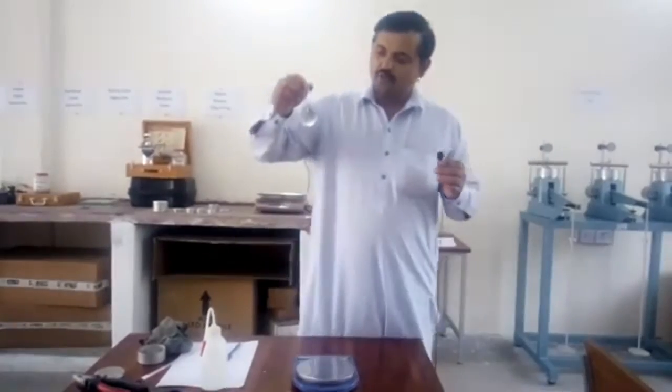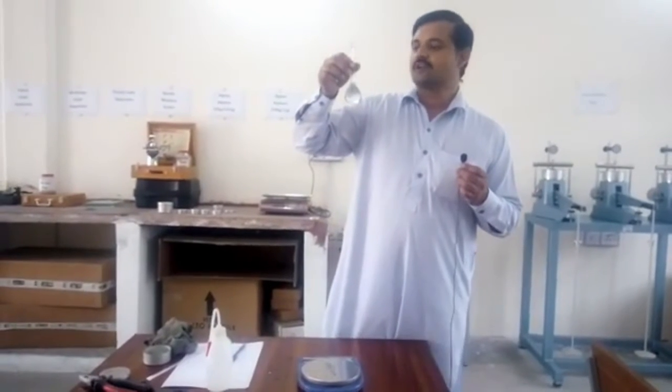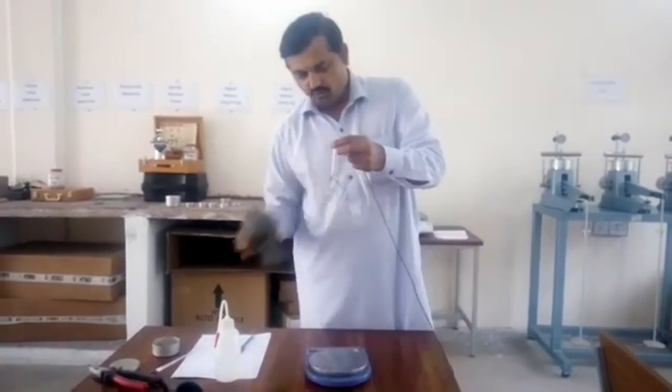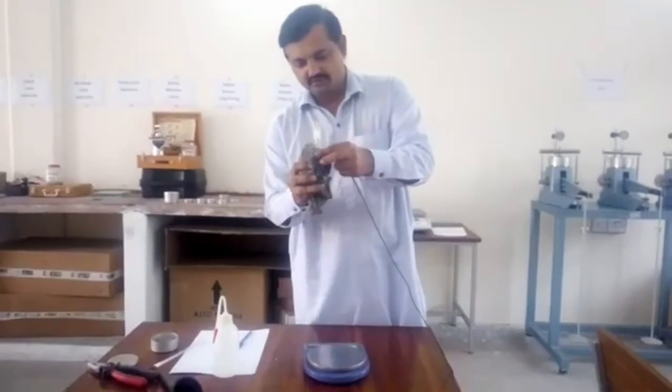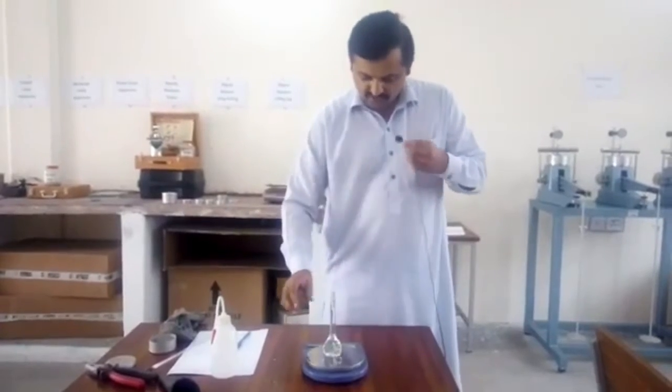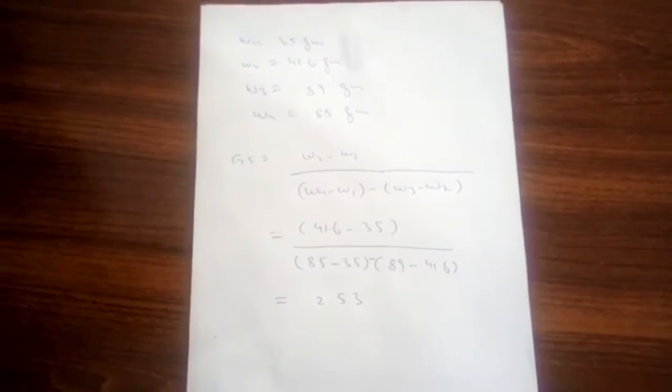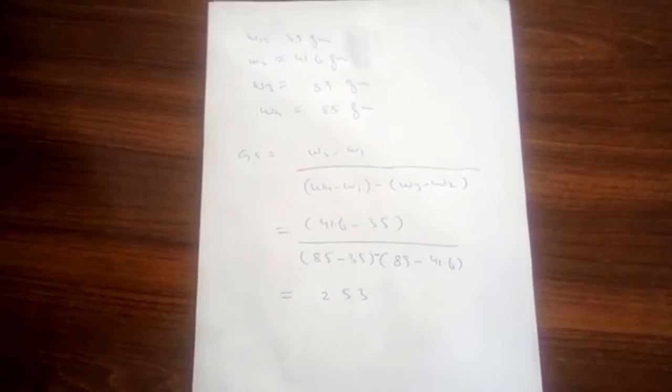For W4, I have washed and dried this bottle, and now I fill it completely with water, wipe and dry the outside, and record its weight as W4, which is 85 grams. So now with W1 equal to 35 grams, W2 equal to 41.6 grams, W3 equal to 89 grams, and W4 equal to 85 grams, we fill all data into the equation: GS equals (W2 minus W1) divided by (W4 minus W1 minus (W3 minus W2)). The resultant value of specific gravity is 2.53.